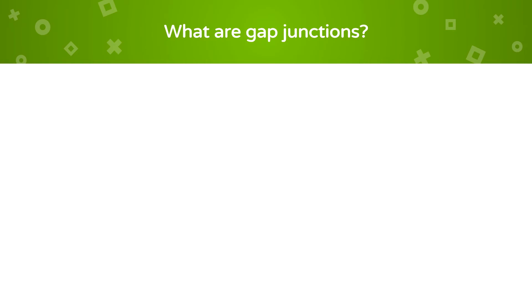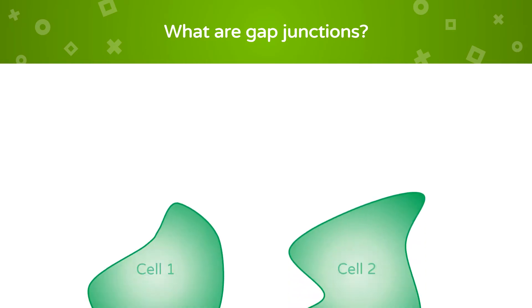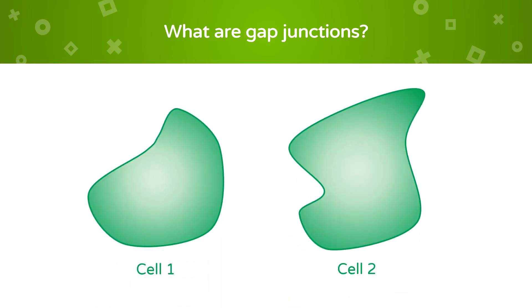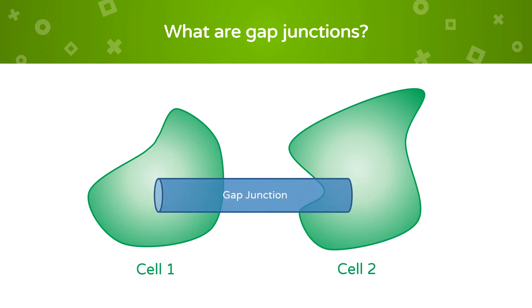Gap junctions are a method of communication between cells in the body. They are like tunnels that can be used to transmit ions, molecules, peptides, or nucleic acids.